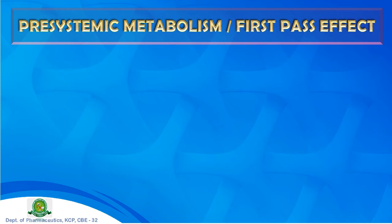The last factor is pre-systemic metabolism or first-pass effect. Two main reasons decrease bioavailability: poor absorption and first-pass metabolism. The loss of drug through biotransformation by eliminating organs during its passage into systemic circulation is called first-pass or pre-systemic metabolism. Four systems influence it: luminal enzymes, gut wall enzymes, bacterial enzymes, and hepatic enzymes. Luminal enzymes include pancreatic secretions that hydrolyze ester drugs like chloramphenicol palmitate into active chloramphenicol, and peptidases that inactivate proteins and polypeptides.